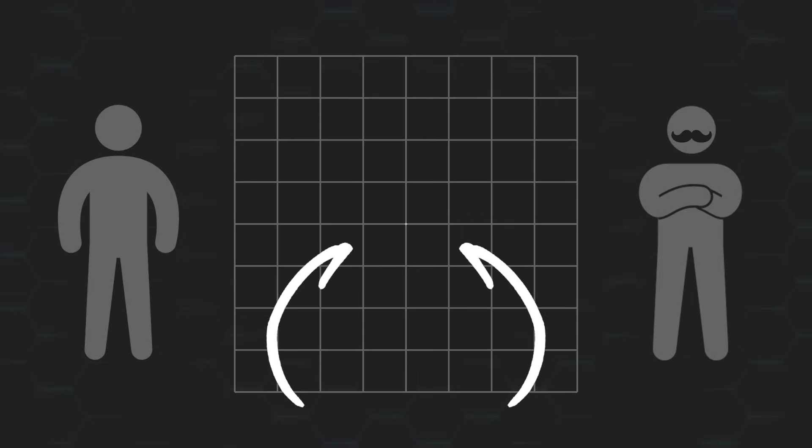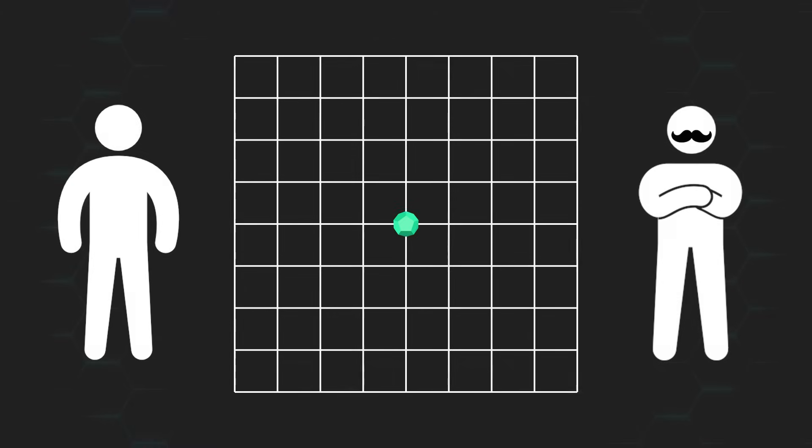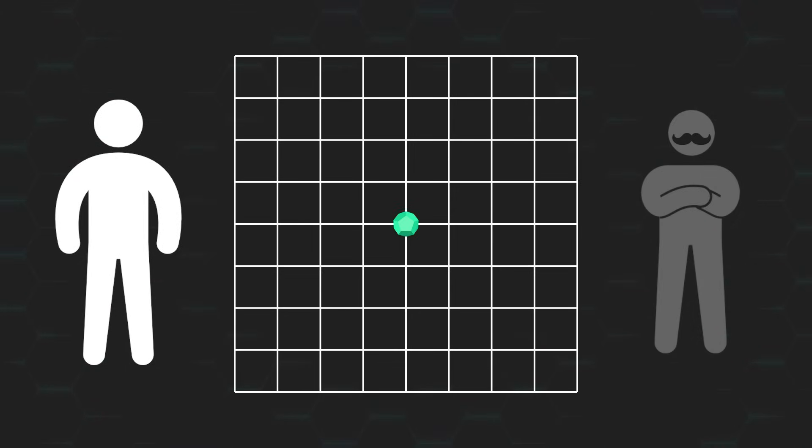The game starts with a greenstone placed on the center intersection of the grid, and we'll be taking turns with you going first. On your turn, you have to move the greenstone from its current position to a vertically or horizontally adjacent intersection that isn't occupied by another stone. And then, once you're done, place a redstone on the greenstone's previous spot.